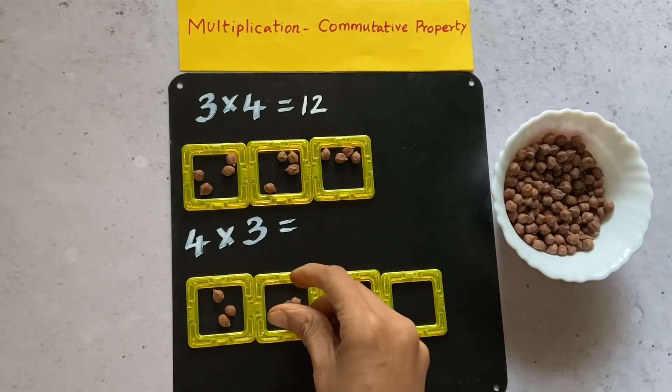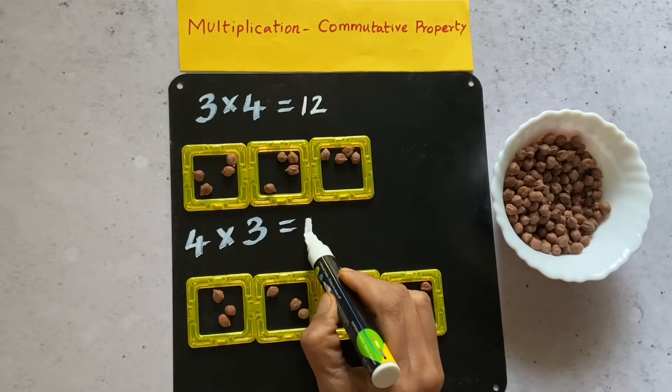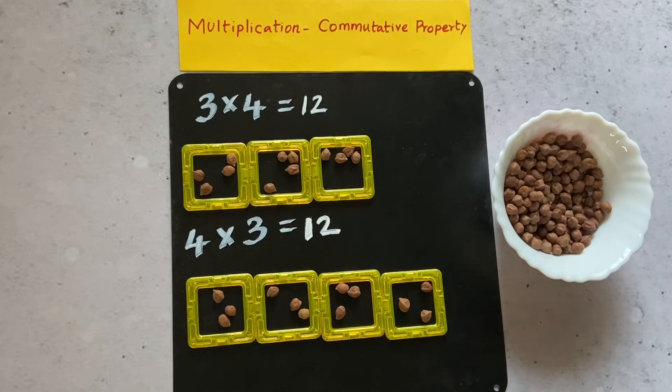Place four of this magnetic tile and add three of this black china in each magnetic tile and the answer is 12. This shows that you can multiply the factor in any order and the product will be the same. So either three times four or four times three, the answer is the same.